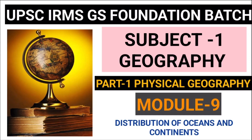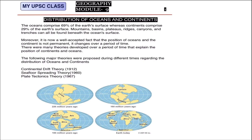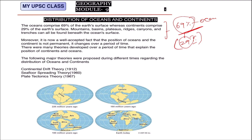Hello students. Today we are going to discuss our module, and in this module we are going to discuss the distribution of oceans and continents — how different oceans and continents are situated on our earth or on our globe. First of all, you need to know that 69 percent of the earth is oceans and 29 percent is earth crust. On the earth crust we have mountains, plateaus, ridges, trenches — everything is part of that 29 percent.